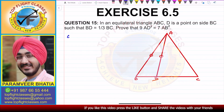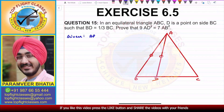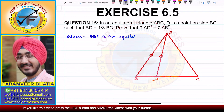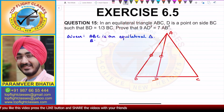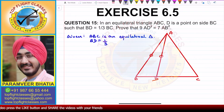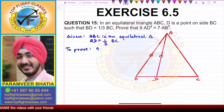So, what is given in this case? That ABC is an equilateral triangle, and BD is equal to one third of BC. To prove: 9AD squared is equal to 7AB squared.